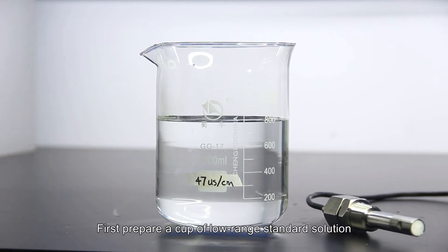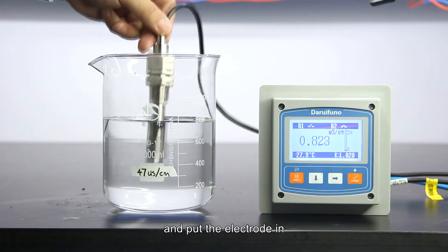First prepare a cup of low range standard solution, such as 47 uS/cm solution, and put the electrode in.